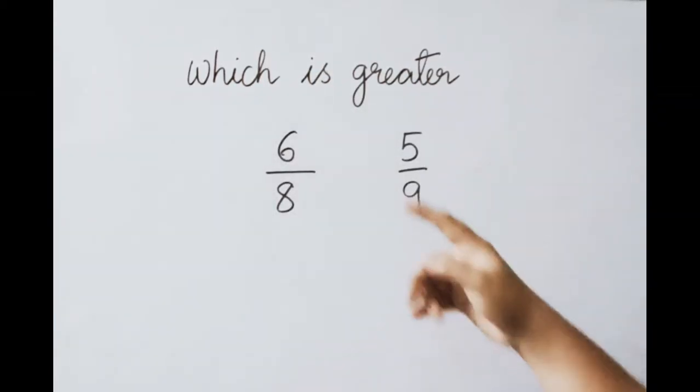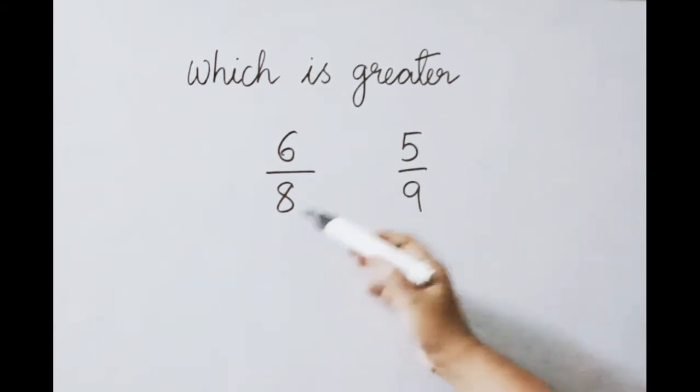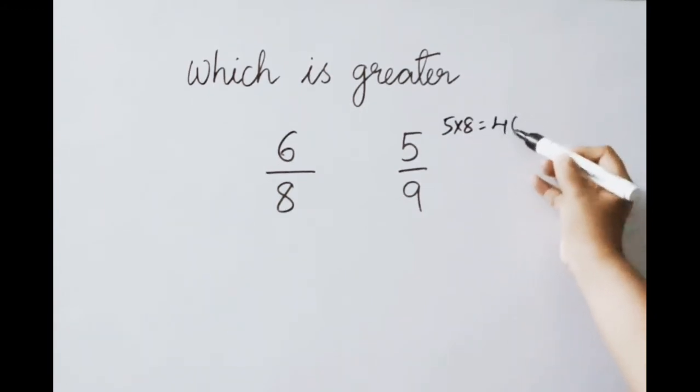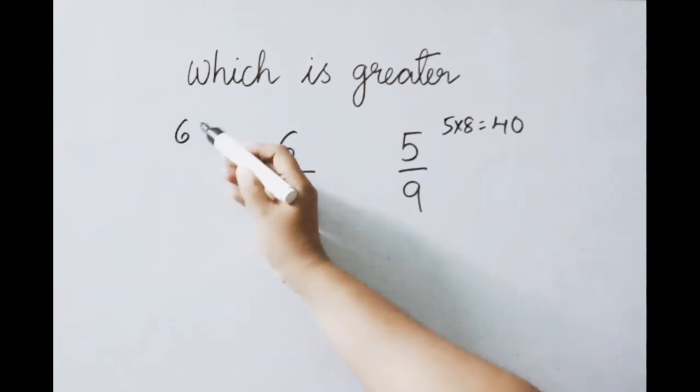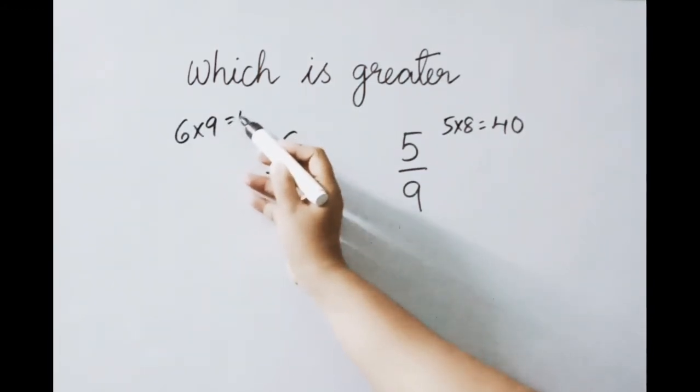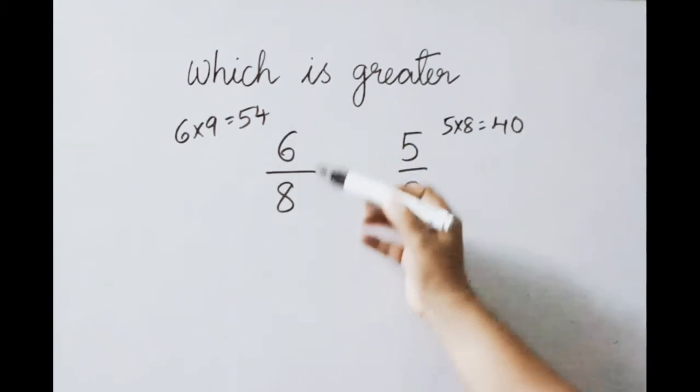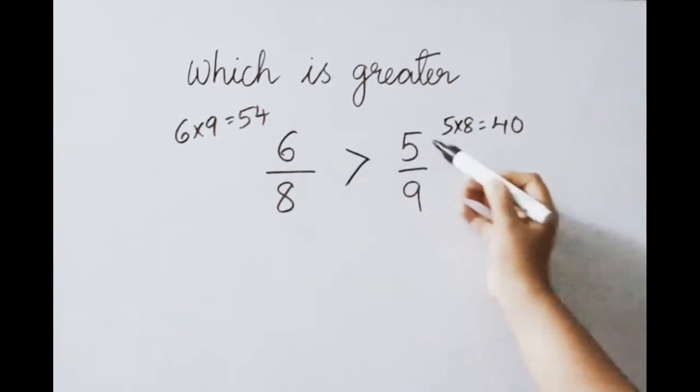See which is greater. 6 by 2 is greater or 5 by 9 is greater. Simply we can say cross multiply 5 into 8. 5 8's are 40. Here 6 into 9. 6 9's are 54. So 54 means this one is greater. So 6 by 2 is greater than 5 by 9.